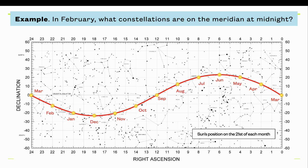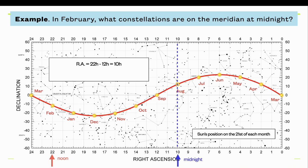In February, what constellations are on the meridian at midnight? If you're looking in this direction at noon, these stars are high in the sky. Midnight comes 12 hours after noon, so you count over 12 hours. If you subtract 12 hours from 22 you get 10, so you count over to 10 hours of right ascension. All of the stars at that right ascension would be on the meridian at midnight in February.